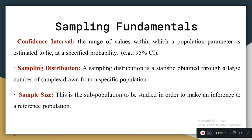Sampling distribution is a statistic obtained through a large number of samples drawn from a specific population. For example, when our population is 50,000 and I am taking 15,000 samples, that is my sampling distribution — showing how much my sample is distributed from the specific population. A statistic is a characteristic of a sample.